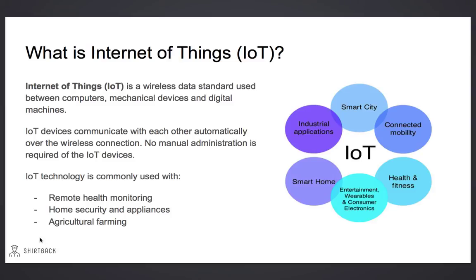Internet of Things is abbreviated as IoT. Internet of Things is a wireless data standard that's used between computers, mechanical devices, and digital machines. IoT devices communicate with each other automatically over a wireless connection. There is no manual administration of IoT devices. Internet of Things is commonly used in areas such as remote health monitoring, home security and appliances, and agricultural farming.